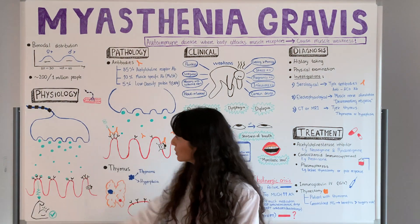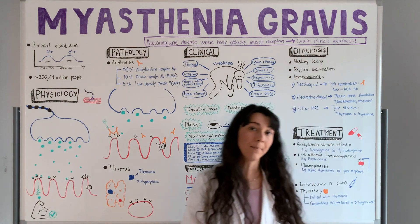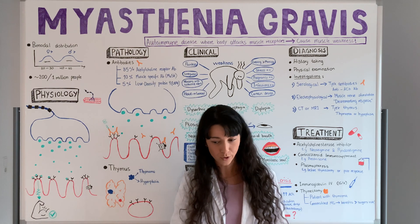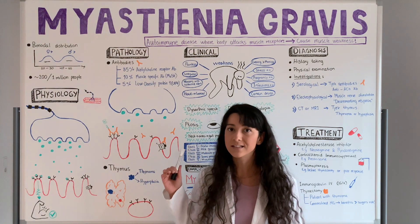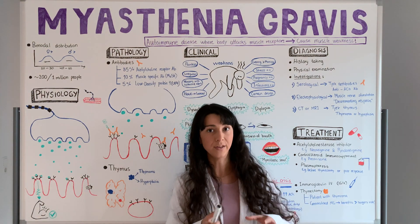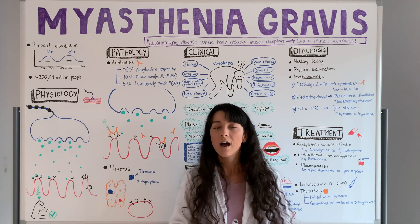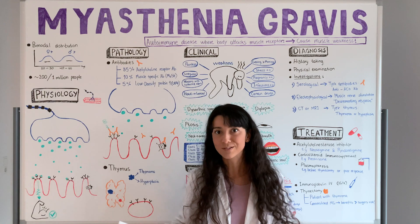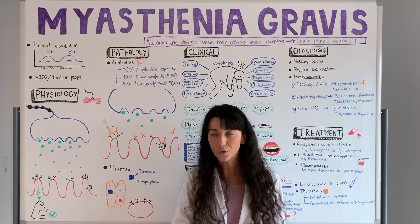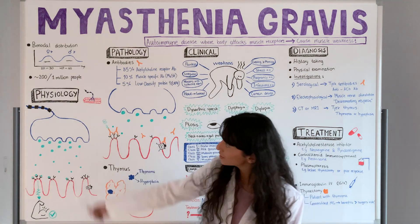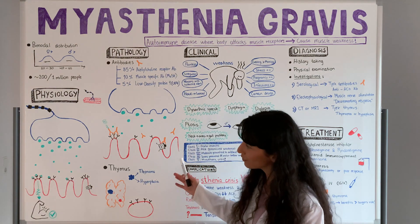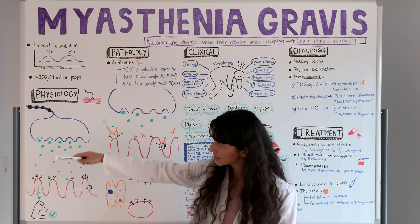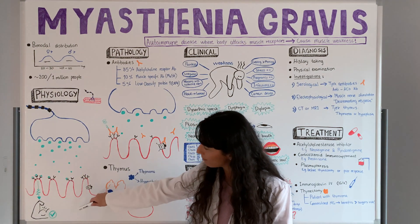Before getting into the details of what happens in myasthenia gravis, we should look at how the body should normally work. Because this disease involves the neuromuscular junction, we need to understand how the neuromuscular junction usually works. So let's get into the physiology. A neuromuscular junction is basically a connection between a neuron and a muscle.